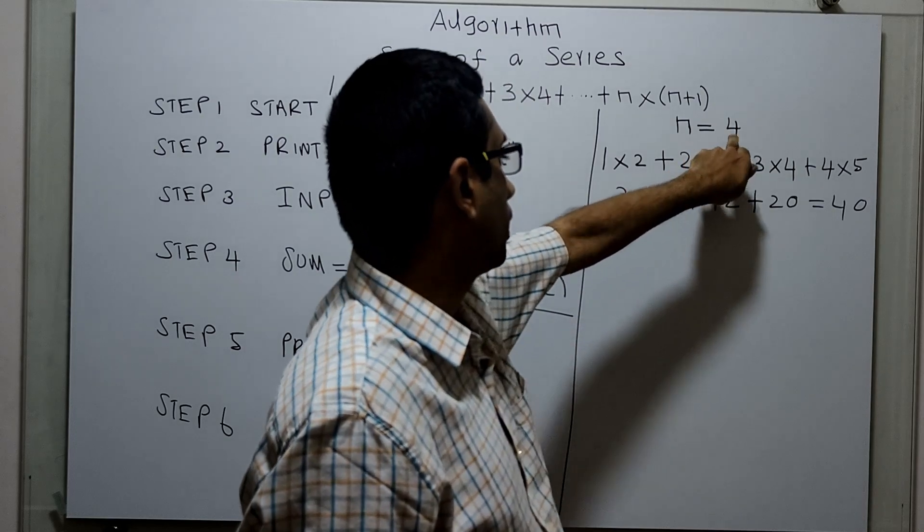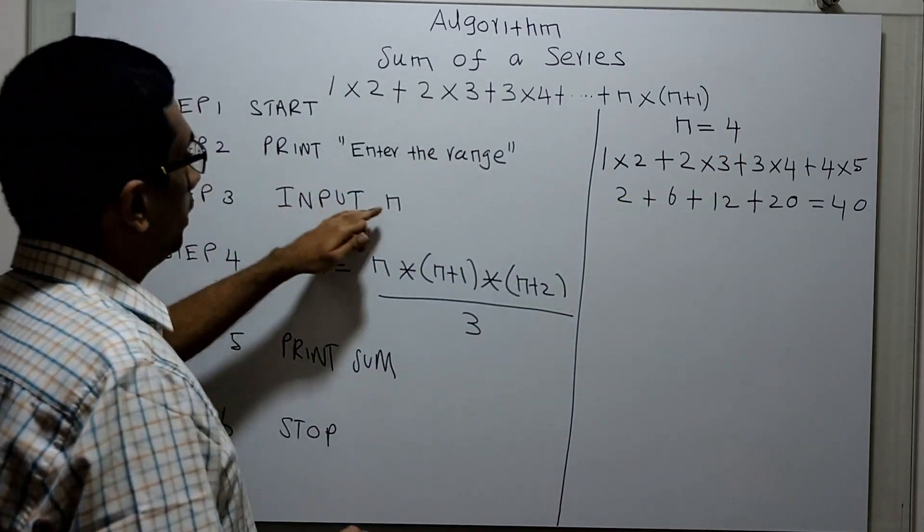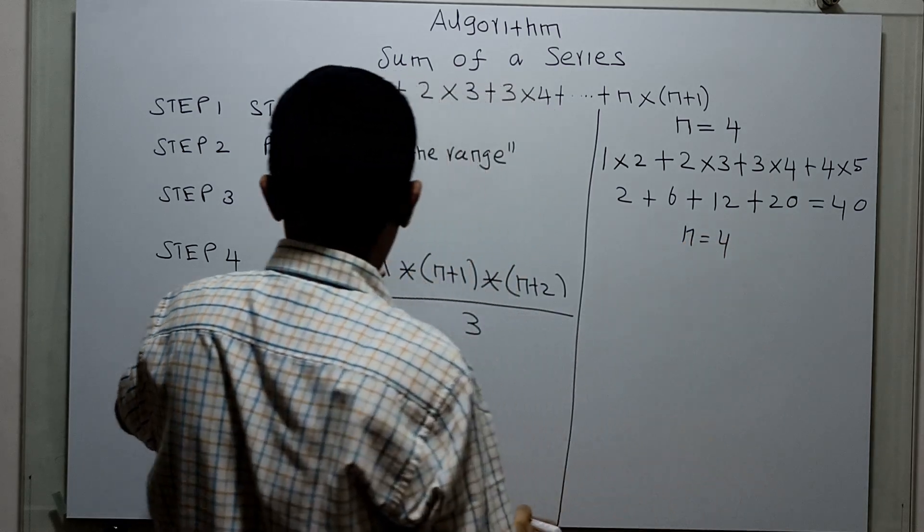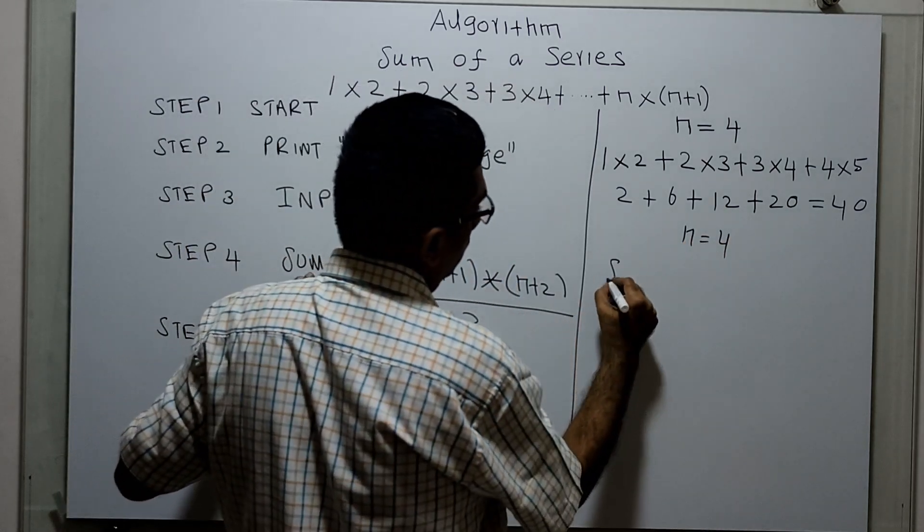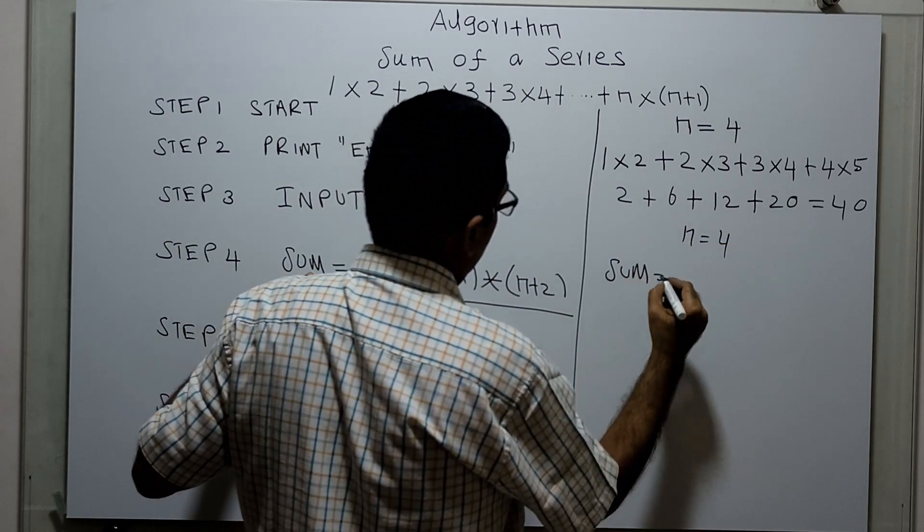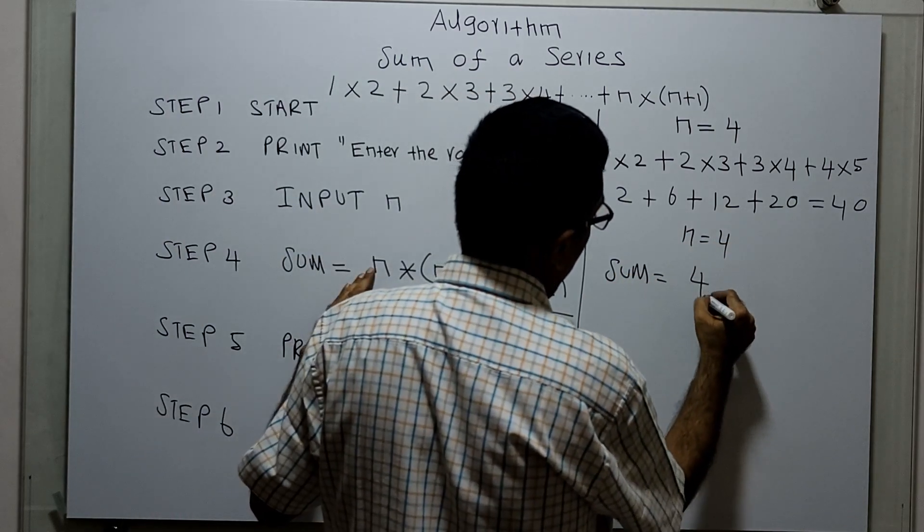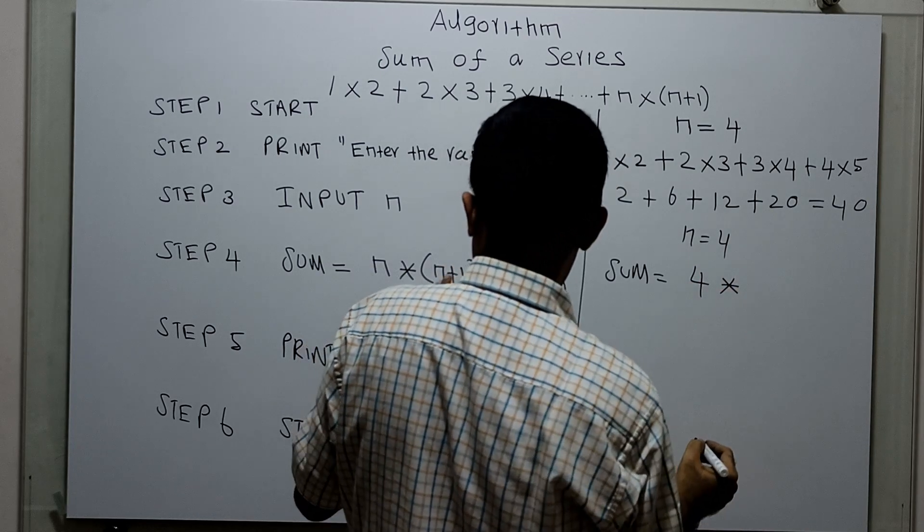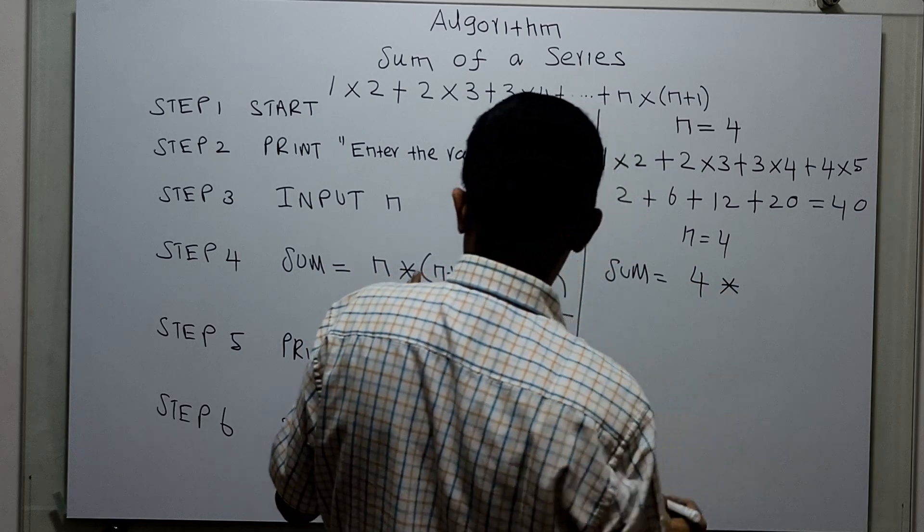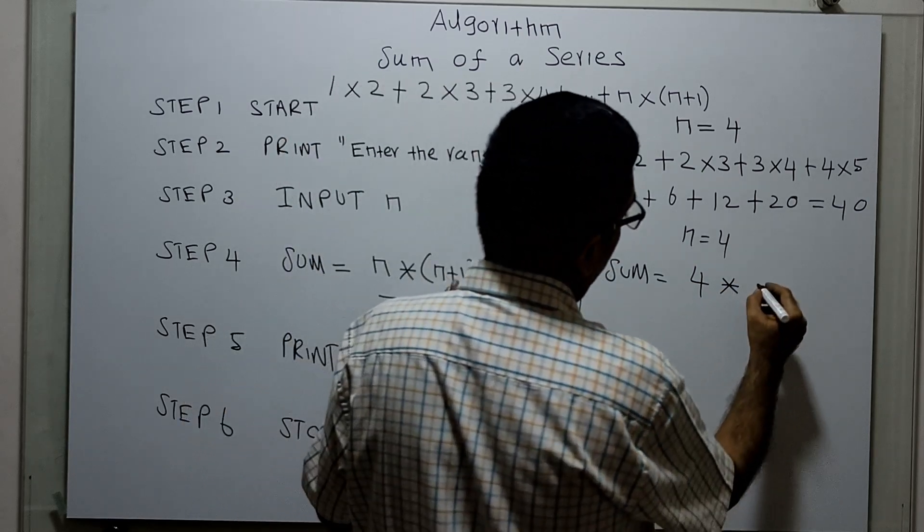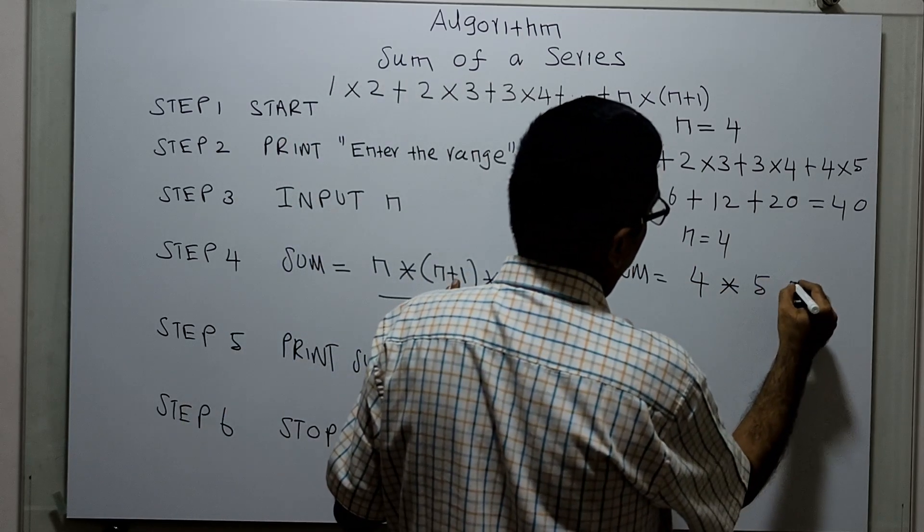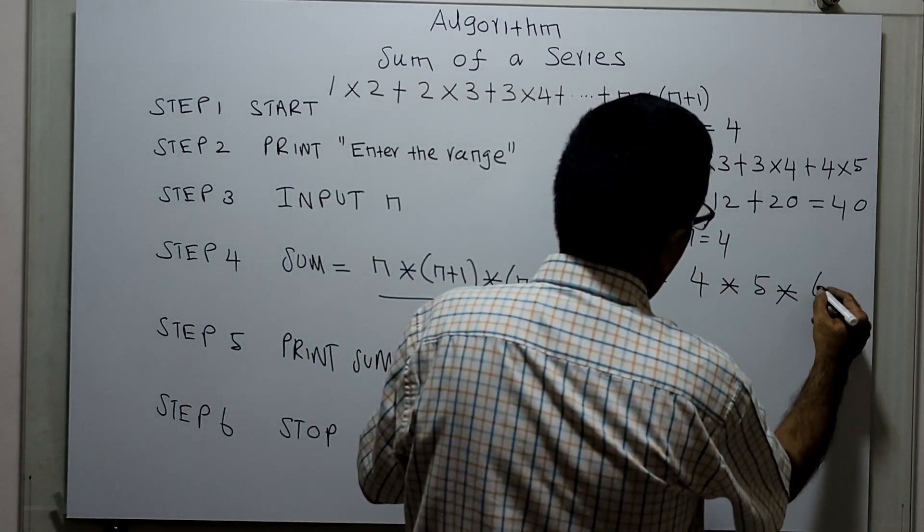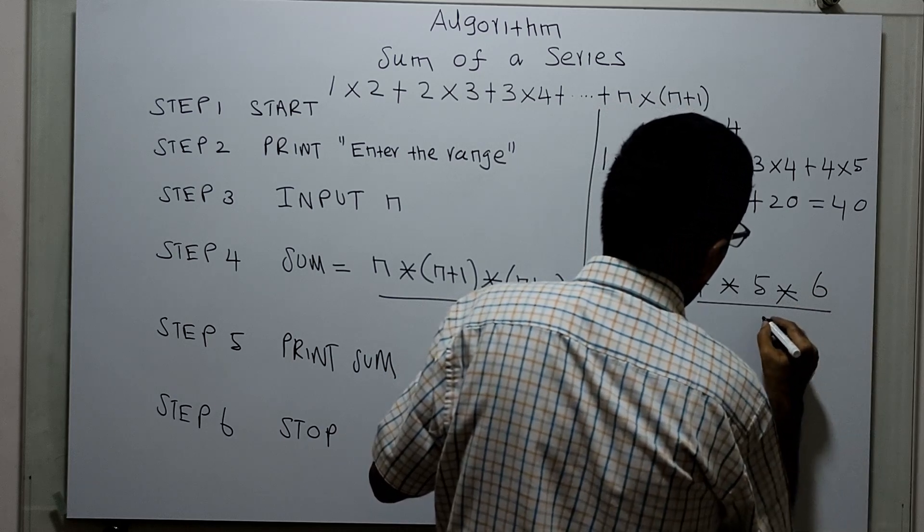For n equals 4, I am giving n equals 4. Sum equals n, that means 4, multiplied by (n+1) which is 5, multiplied by (n+2), that means 4+2 is 6, divided by 3.